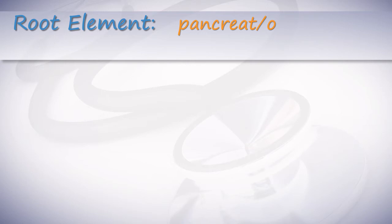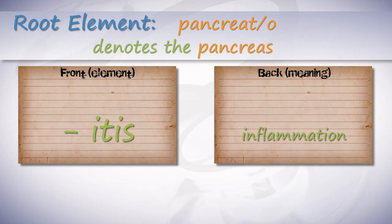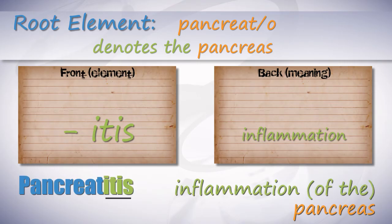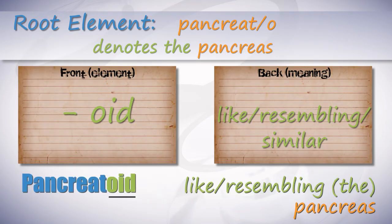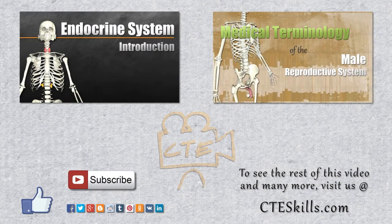Pancreato denotes the pancreas. The suffix -itis means inflammation; pancreatitis is inflammation of the pancreas. The suffix -oid means like, resembling, or similar; pancreatoid means like or resembling the pancreas.